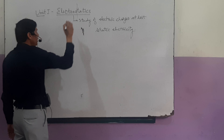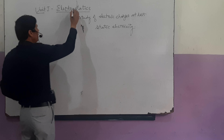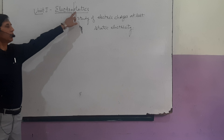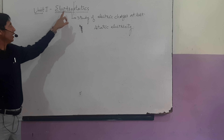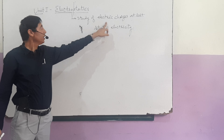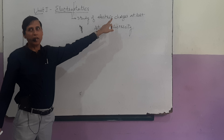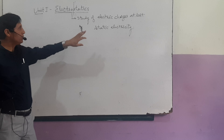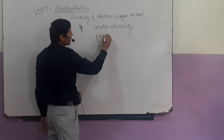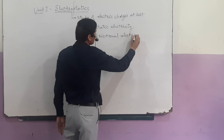If we divide electrostatics into two parts: 'static' means at rest, and 'electro' is taken from electric charges. So it is known as electric charges at rest. Sometimes it is also called frictional electricity.